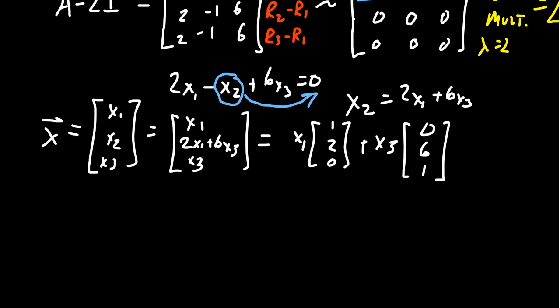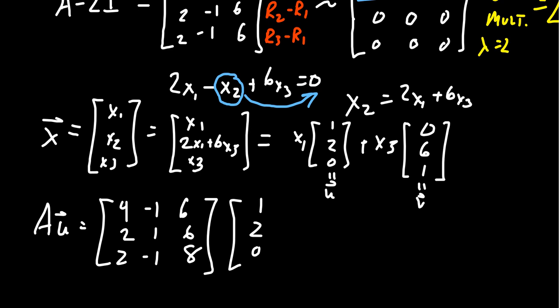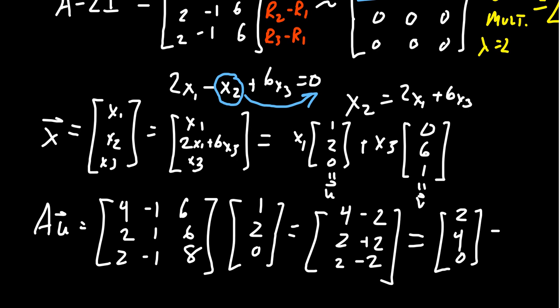Let's actually verify that we did find eigenvectors for this thing. We take the matrix A, we'll call this first one u and the second one v. So if you take Au, remember the matrix was 4,-1,6; 2,1,6; 2,-1,8. Multiply it by the vector [1,2,0]. When you multiply these out, you end up with 4 minus 2, you're going to get 2 plus 2, and then lastly you're going to get 2 minus 2. Which when you simplify this, you end up with [2,4,0]. Which factoring out the eigenvalue 2, you get 2 times [1,2,0]. So [1,2,0] is an eigenvector like we saw.